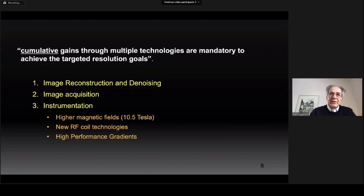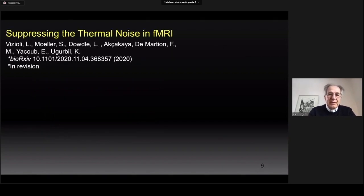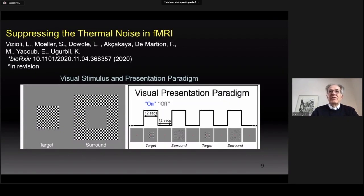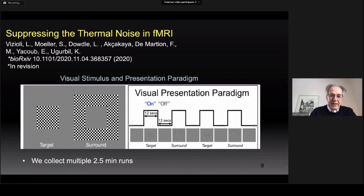In the reconstruction and denoising category, the effort I want to talk about concerns suppressing thermal noise in functional MRI. The experiment we employed to demonstrate this method is an fMRI study that used visual stimulation of either a four-wheel target or the region surrounding this target. It's a block design study and we collected multiple two-and-a-half-minute runs of this paradigm.